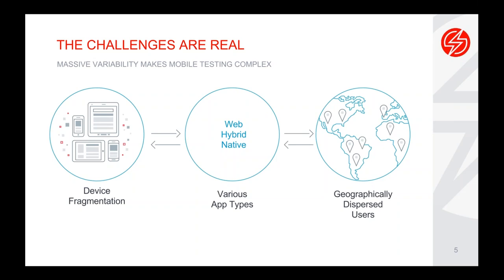The third challenge is geographically dispersed users. This could mean issues with translations of applications into different languages, or different connection speeds. You need to make sure that when developing a mobile app, you account not only for users within your region but users worldwide who may access that application. This makes mobile application testing very difficult — especially when you try to implement DevOps or continuous integration and continuous delivery within your mobile app development cycle.